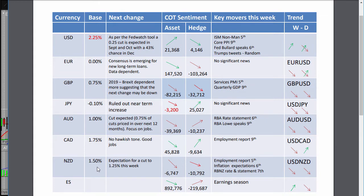New Zealand dollar is expected to be cut to 1.25% this week on the 7th, which would be pretty much priced in. It's not to say it won't have an effect because it really depends on the statement that comes with it — the actual cut is priced in, it's the statements that make the difference. Both asset managers and hedge funds are increasing their negative positions. They're nowhere near as extreme as the size they were back in September/October last year, which may suggest there could be more downside. The trend is following that line.